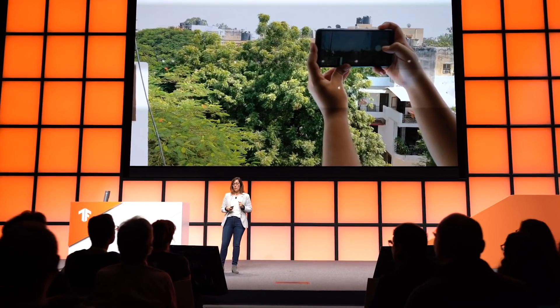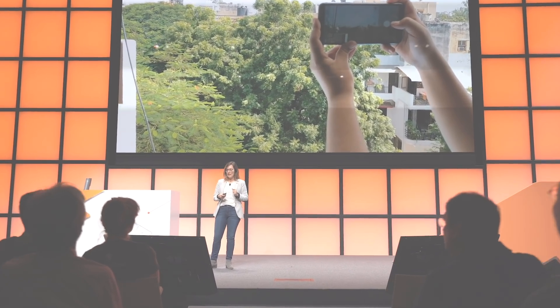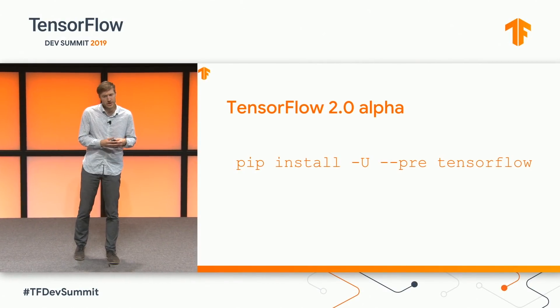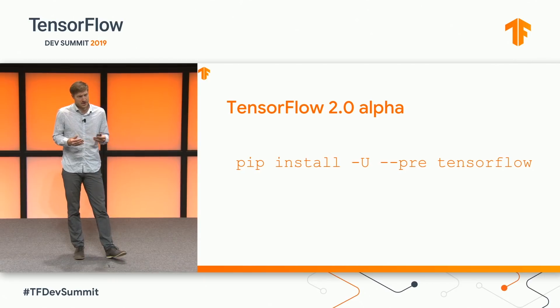The full keynote from today is linked below. But if you want just the highlights, here they are — the TensorFlow Dev Summit top five. Number one: the TensorFlow 2.0 alpha release. This is really the biggest announcement of the summit. TF 2.0 is all about making TensorFlow simple and easy to use with higher level APIs focused on Keras and eager execution.